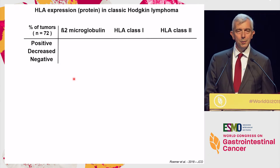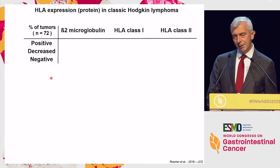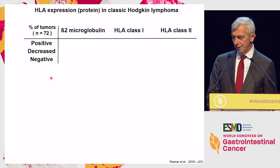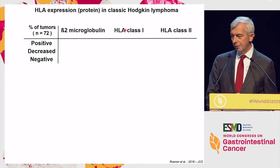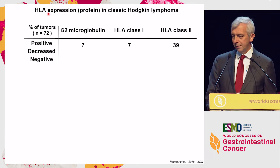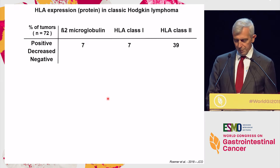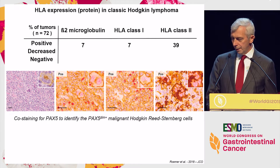This is a work by Margaret Shipp in the US. Seventy-two patients here, and they analyzed HLA class I surface expression on the Reed-Sternberg cells. They looked at beta-2 microglobulin itself, at HLA class I heavy chain, and also at HLA class II as a control. Only 10% of their samples were clearly positive for beta-2 and class I.